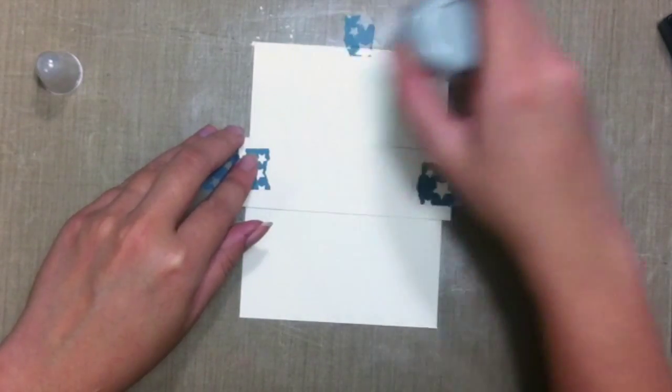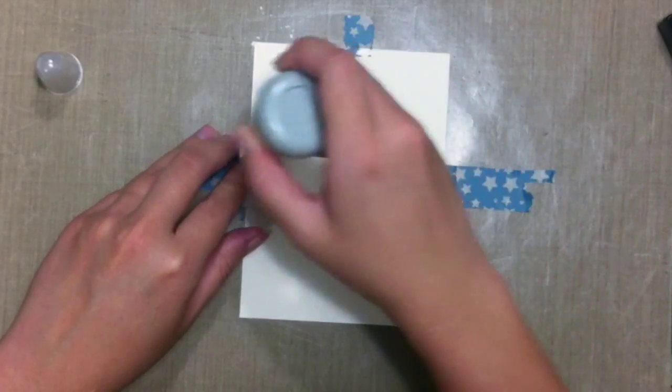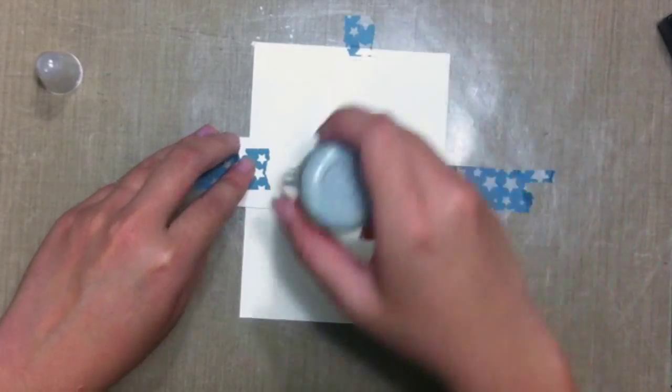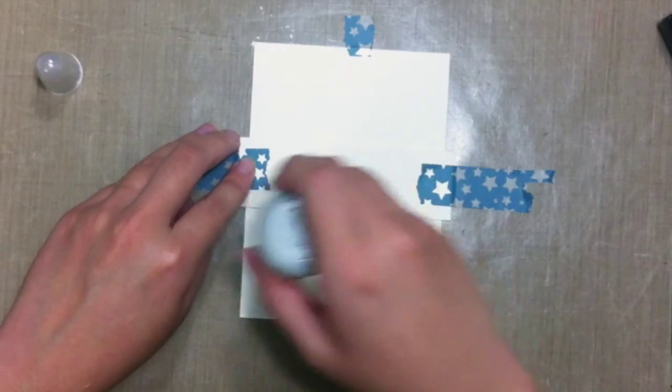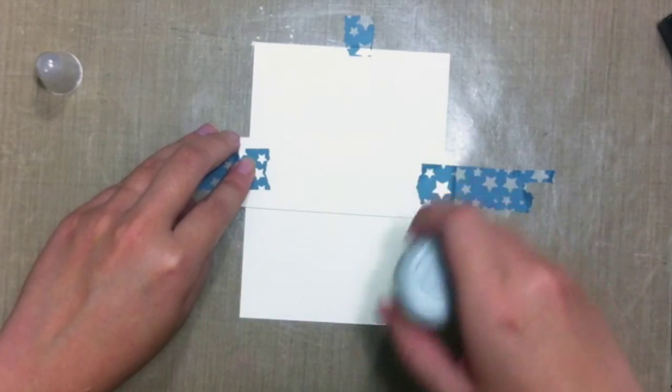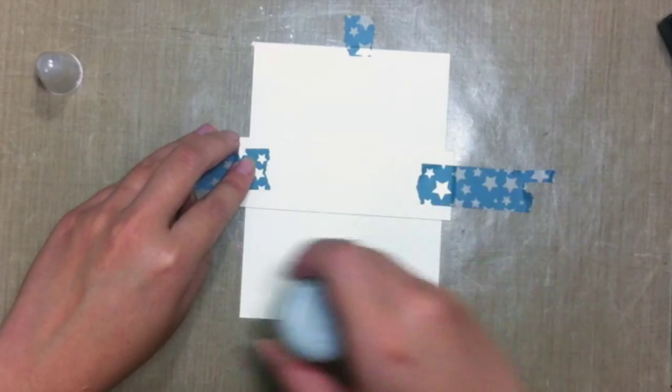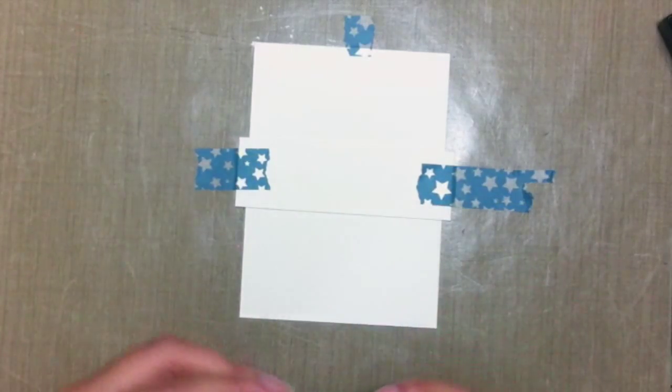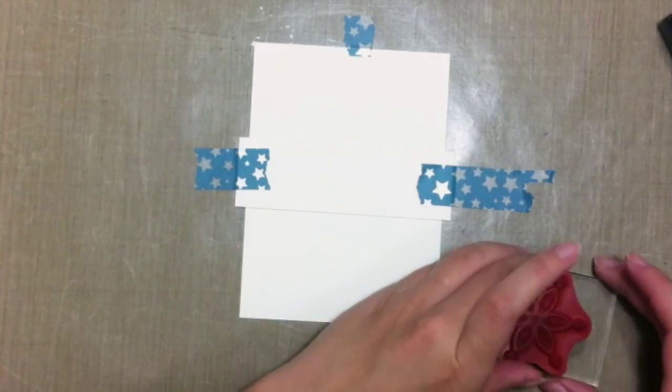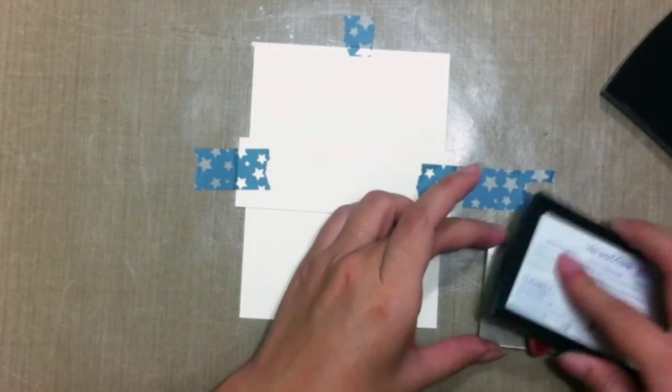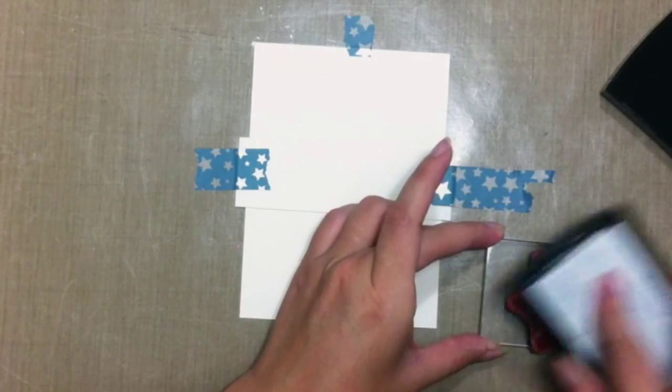This is just to make sure that there's no static when you place your embossing powder, and it will actually only emboss at the right places. Once done, get your stamp and emboss it with some embossing ink.